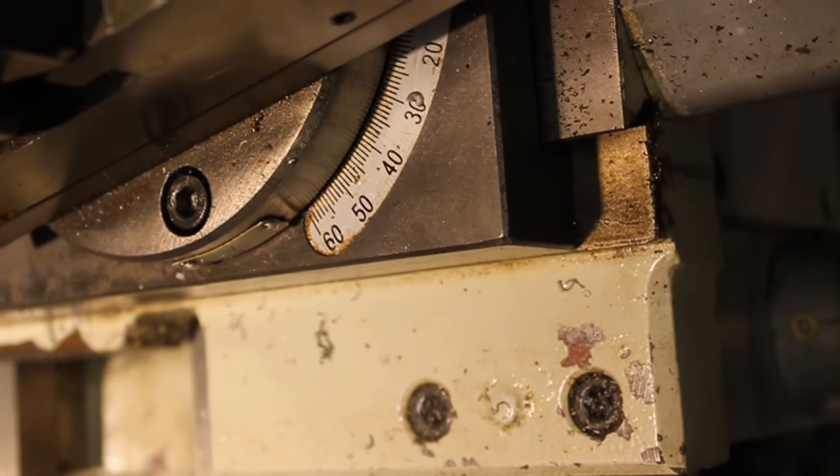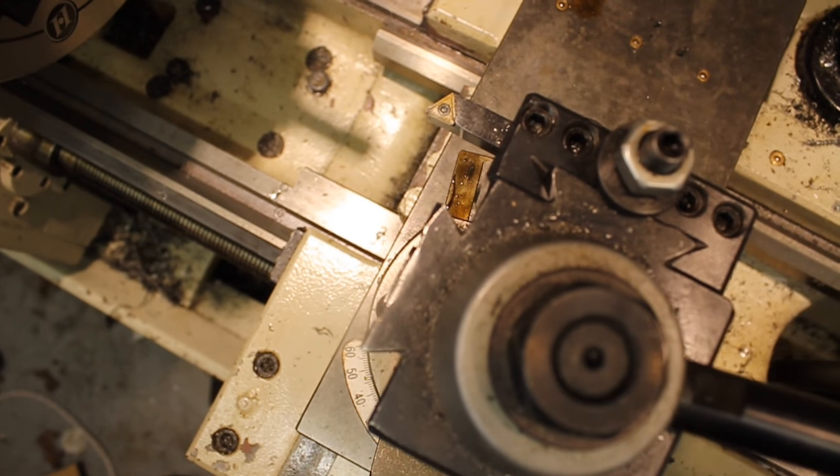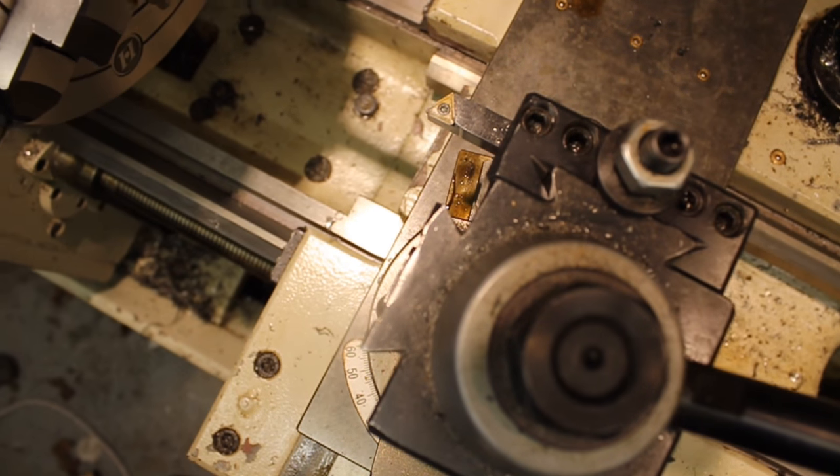Next, the compound rest of the lathe is set to 11 degrees. The tool post will then need to be set square to the work.